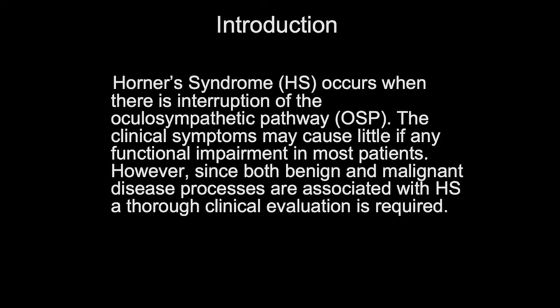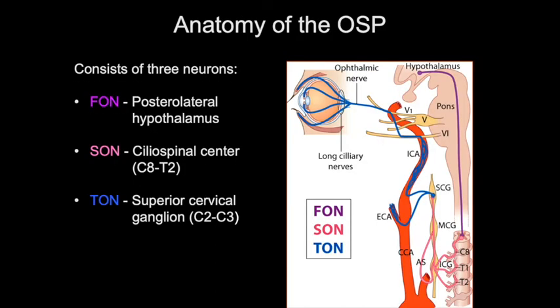Horner syndrome occurs when there is an interruption of the oculosympathetic pathway. The clinical symptoms may cause little functional impairment in most patients. However, since both benign and malignant disease processes are associated with Horner syndrome, a thorough clinical evaluation is required. The oculosympathetic pathway consists of three neurons: the first-order neurons in the posterior lateral hypothalamus, the second-order neurons in the ciliospinal center from C8 to T2, and the third-order neurons in the superior cervical ganglion at the C2-3 level.